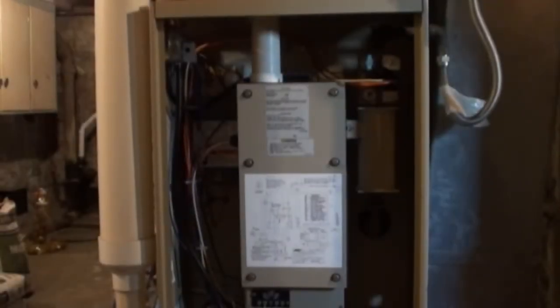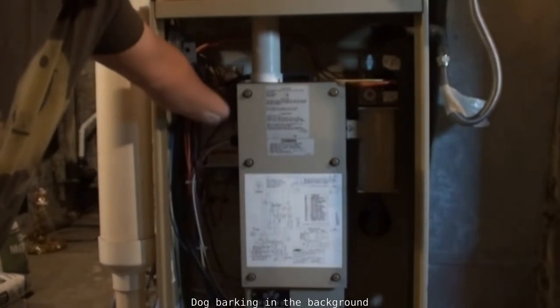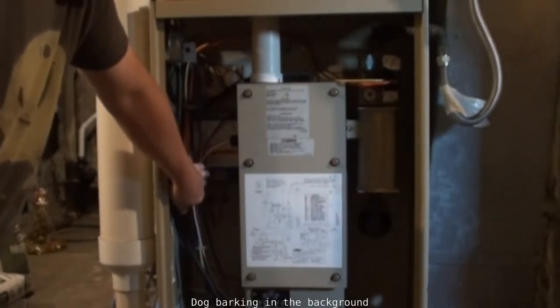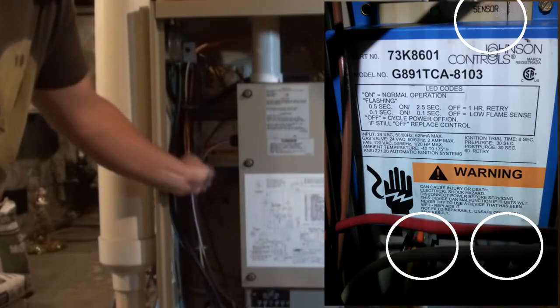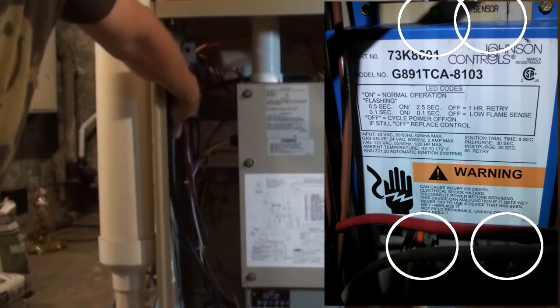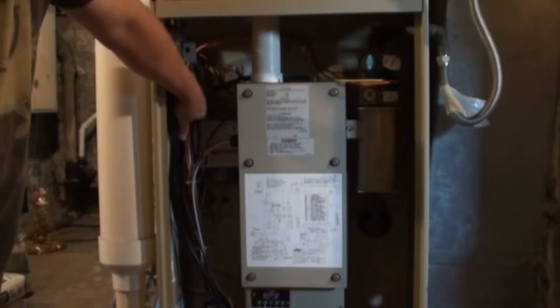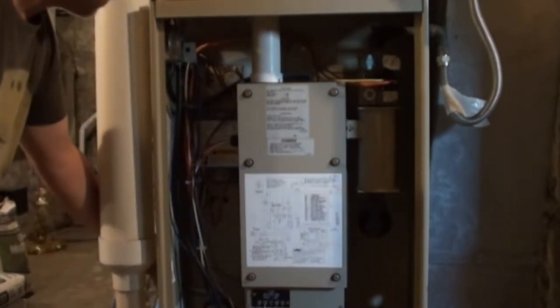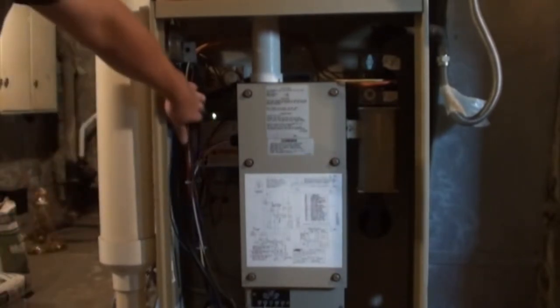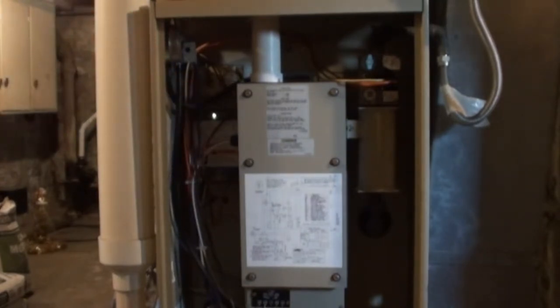All right, so we got the new controller board in there. Everything plugs up real simple. We got our main connector here, we got our spark wire here, and then we got our sense wire here. Our LED's up here on the top. So I'm going to flip the on switch, and then we should see that come on steady. And then we'll actually turn on the furnace and see if that works. Okay, so our green light is on steady, so that's a good sign. So let's turn on the furnace now, and then we'll see if it actually kicks in properly.